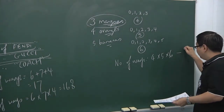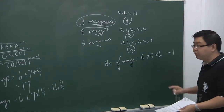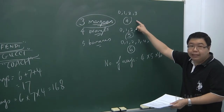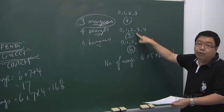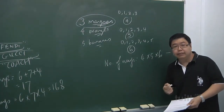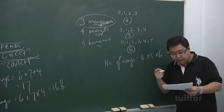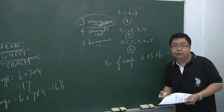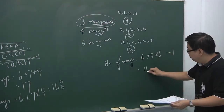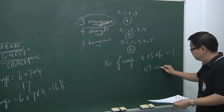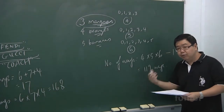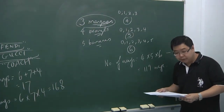But you subtract one. The reason is that there could be a possibility you choose zero mangoes, zero oranges, and zero bananas. We need to remove that case because the question says she brings some or all, so selecting no fruit at all is not allowed. Subtracting one gives you one hundred and nineteen ways. These three examples show how we can do counting using the addition and multiplication principles.